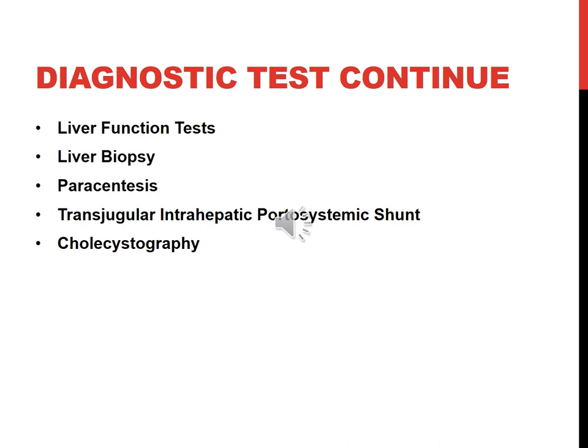ALT levels increase primarily in liver disorders and may be used to monitor the course of hepatitis, cirrhosis, or the effects of treatments that may be toxic to the liver. AST is present in tissues with high metabolic activities; levels may increase with damage to or death of tissue of organs such as the heart, liver, skeletal muscles, and kidney. Levels of AST may be increased in cirrhosis, hepatitis, and liver cancer. Increased GGT levels are associated with cholecystitis and gallstones, but can also be due to alcohol liver disease.